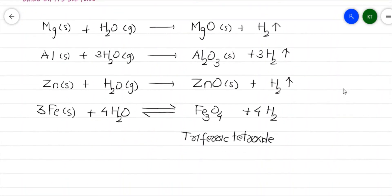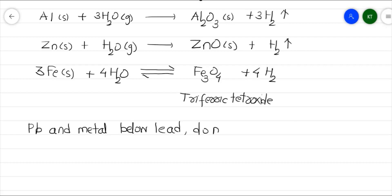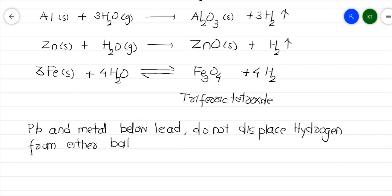Metals present below iron in the activity series, like lead and metals below lead, do not displace hydrogen from either boiling water or steam. So we do not write these reactions for lead and below-lead metals because they cannot displace hydrogen from any form of water — neither boiling water nor steam — and no change takes place.